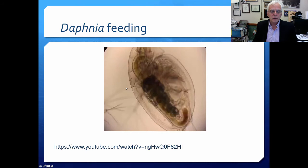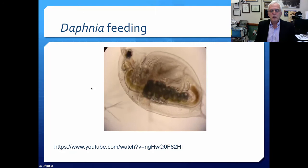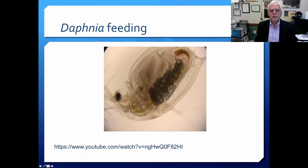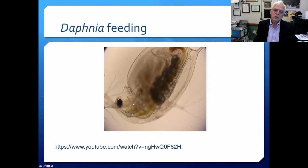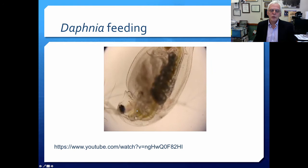Here's Daphnia feeding. You can see those thoracic appendages beating along, food that's been taken in, and food boluses brought into the gut. They really can go very fast, taking particles out, putting them in a food bolus, bringing them in through the mandibles, and then putting them into the gut. Here you see some food that's been collected in the foregut, going back into the overall gut.